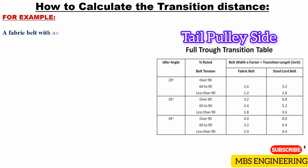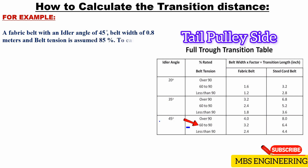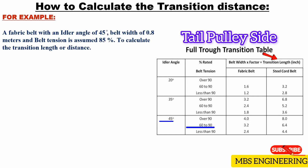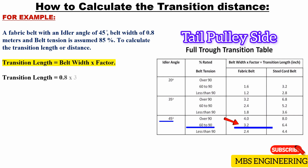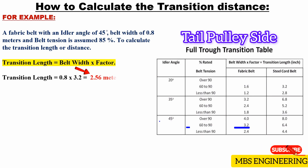Sample example: A fabric belt with an idler angle of 45 degrees, belt width of 0.8 meters, and belt tension assumed at 85%. The transition distance formula gives: Transition distance = belt width × factor = 0.8 × 3.2. Therefore, the obtained minimum recommended transition distance is 2.56 meters.